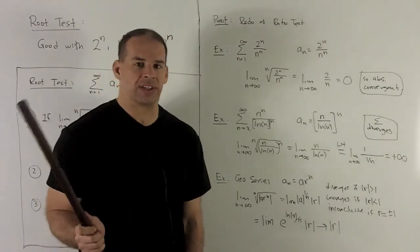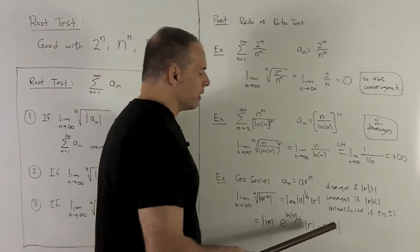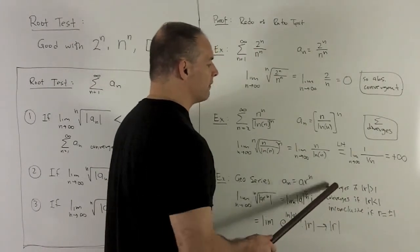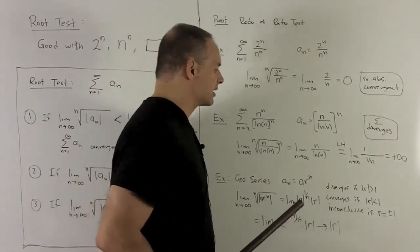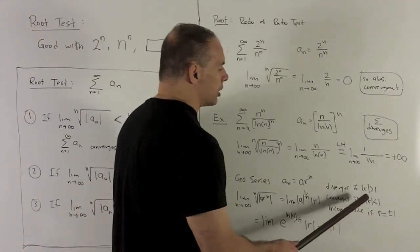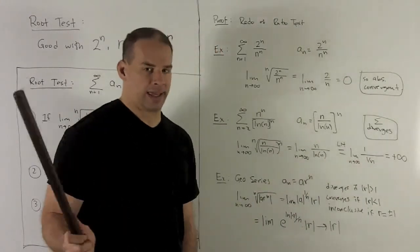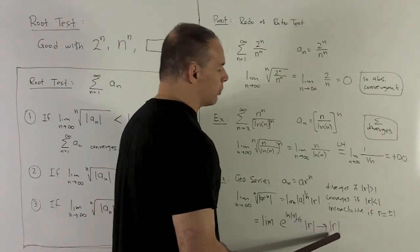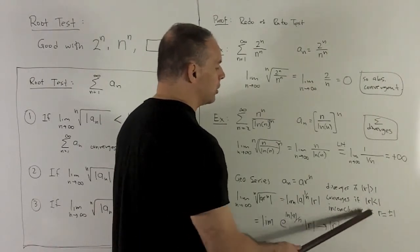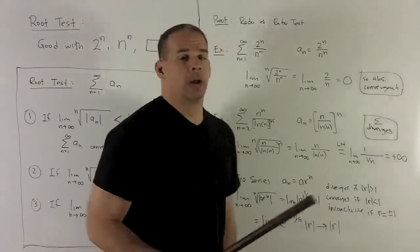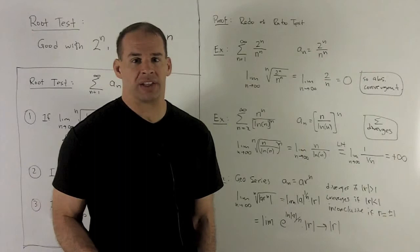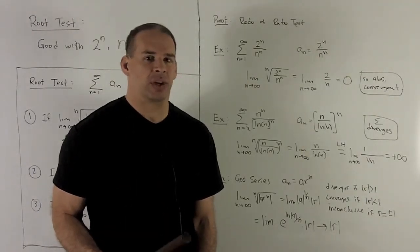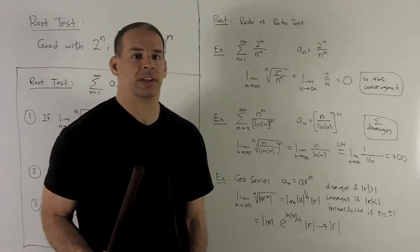We're left with the same three cases as in the ratio test. If the absolute value of r is greater than 1, the series diverges — same as the geometric series test. If the absolute value of r is strictly less than 1, the series converges — again matching the geometric series test. But if r equals exactly plus or minus 1, the root test is inconclusive. So we almost recover the geometric series test, except when r equals plus or minus 1 — and it fails for the same reason the ratio test does.